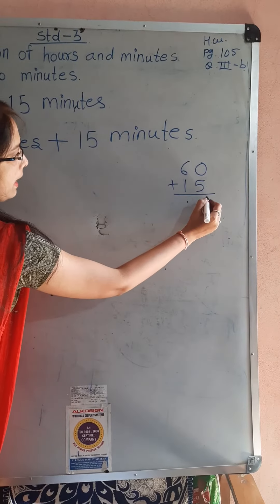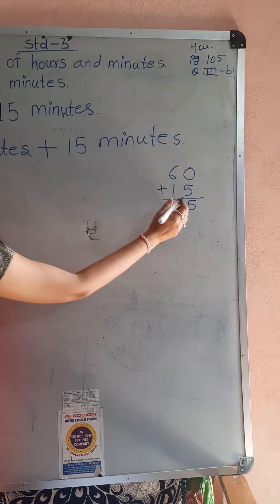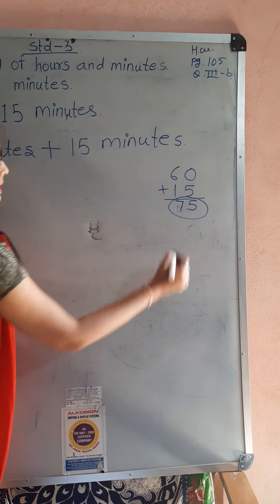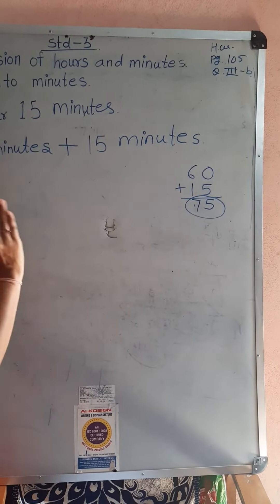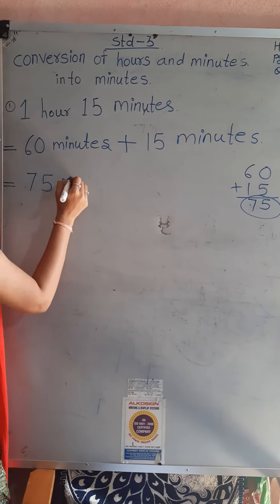0 plus 5 is equal to 5, and 6 plus 1 means 75 minutes. So write down here, 75 minutes.